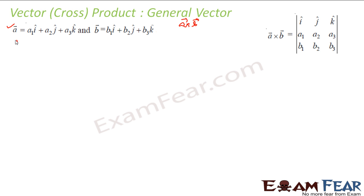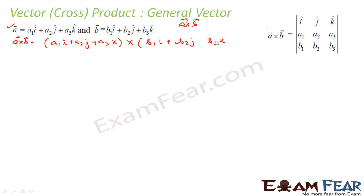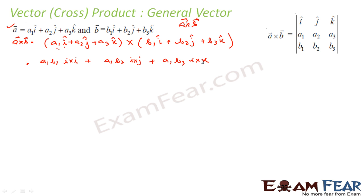To prove this, A×B = (A1î + A2ĵ + A3k̂) × (B1î + B2ĵ + B3k̂). Expanding, we get A1B1(î×î) + A1B2(î×ĵ) + A1B3(î×k̂), then A2B1(ĵ×î), A2B2(ĵ×ĵ), A2B3(ĵ×k̂), then A3B1(k̂×î), A3B2(k̂×ĵ), and A3B3(k̂×k̂). All unit vectors have caps.